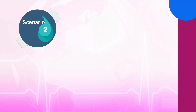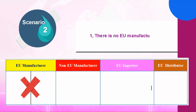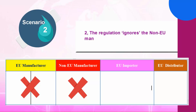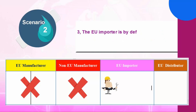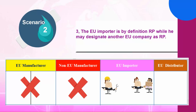Scenario 2: a product manufactured outside Europe and imported to Europe. Points to consider: (1) There is no EU manufacturer. (2) The regulation ignores the non-EU manufacturer. (3) The EU importer is by definition the RP, while they may designate another EU company as RP. However, RPs will always sign a mandate directly with the non-EU manufacturer before signing with the EU importer, to ensure they receive the product information.